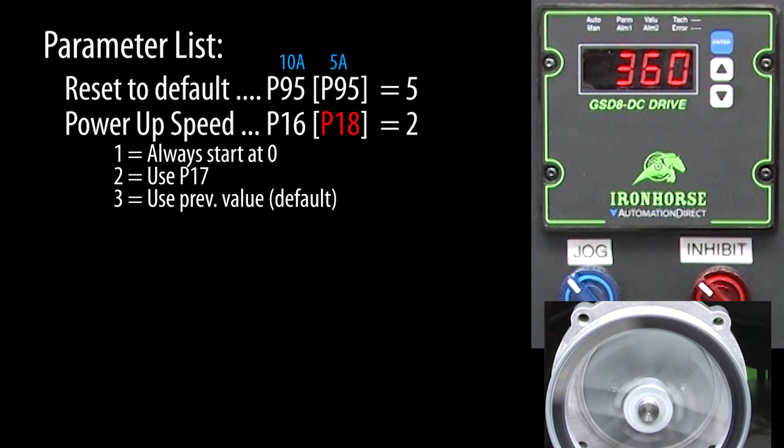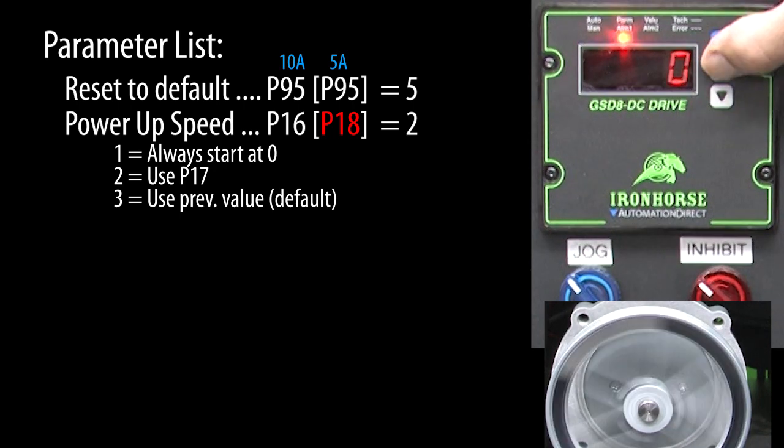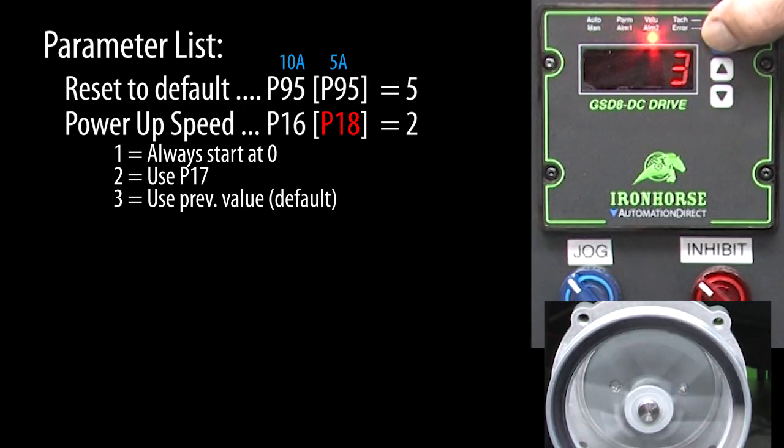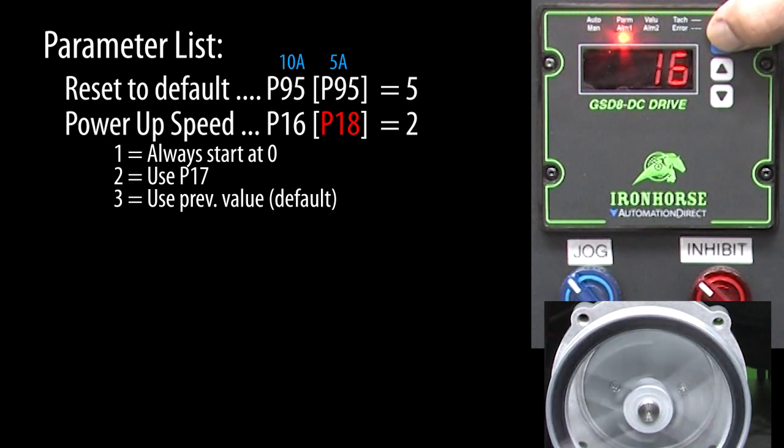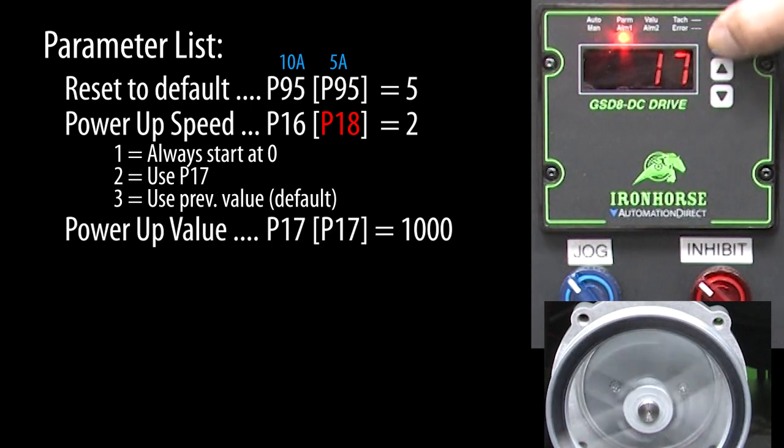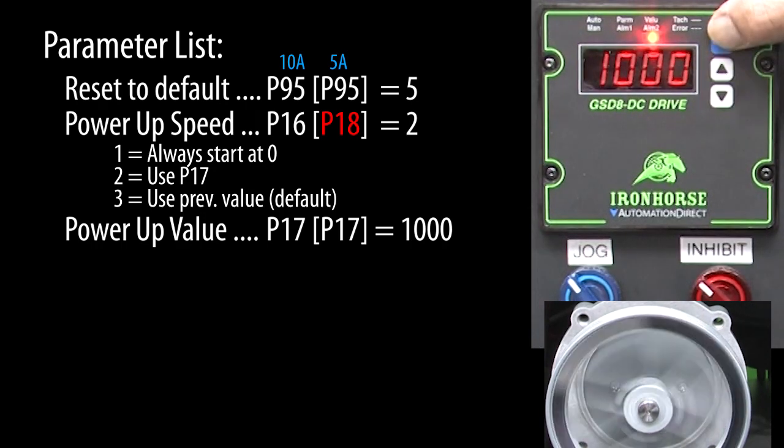Let's change that to use the value in parameter 17. I'll hold the enter button down for 3 seconds. The parameter LED lights up telling us we are in parameter mode. Scroll up to parameter 16, hit enter. Let's change it to use whatever we put in parameter 17, which according to the user manual is a 2. Enter to accept. Scroll up to 17, press enter, and let's have the drive always start at 1000 RPM. Enter to accept.